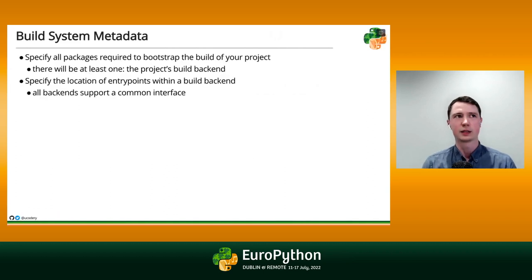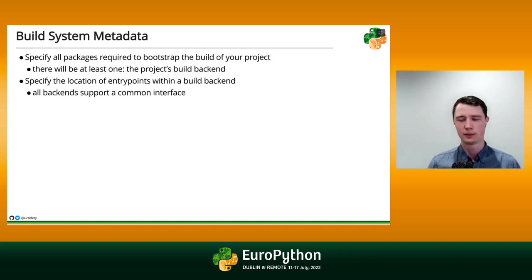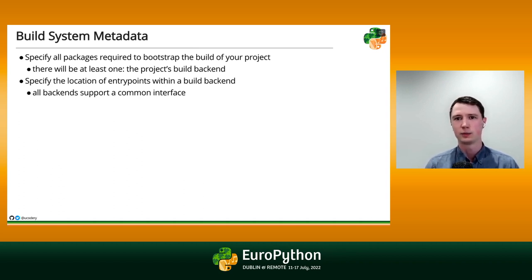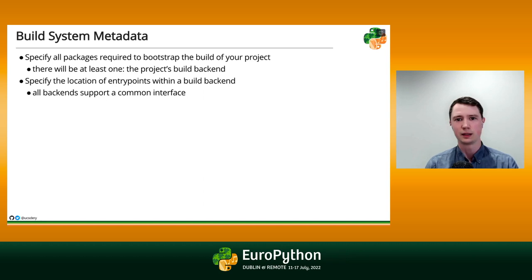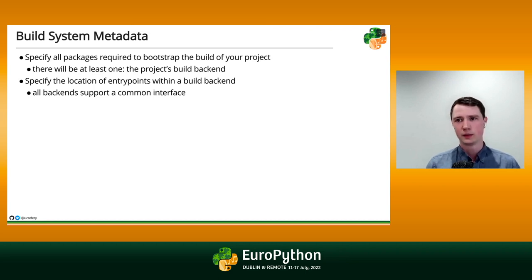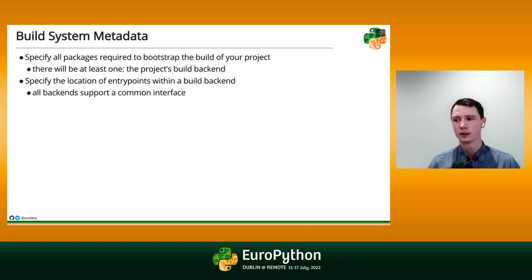The first thing we're going to put in pyproject.toml is some build system metadata. We're going to have to choose a builder because in Python, unfortunately, there's really no way to build a Python distribution these days without a third-party dependency. You have to have something installed beyond just Python. Whatever you choose, consumers of your package who want to build it — including machines — have to know what that choice was. You also have to write down the entry point into the build system of how it wants itself launched.